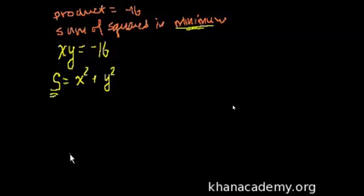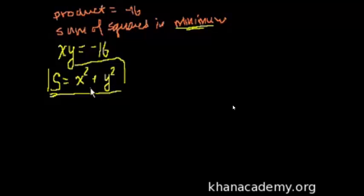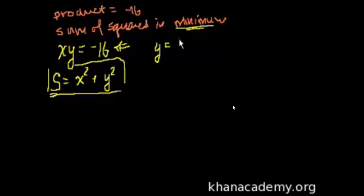We want to minimize this function, but right now it's a function of two variables and we haven't done multivariable calculus yet. So it would be easier to express this as a function of one variable. We can substitute for y by dividing both sides of x times y equals minus 16 by x, giving us y equals minus 16 over x.